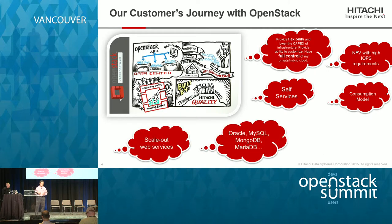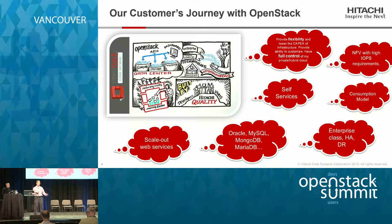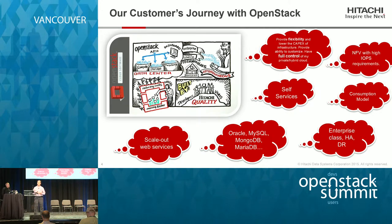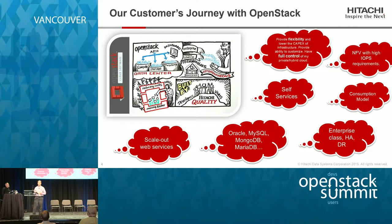A couple more examples: scale-out web services running many different databases on top of our Cinder drivers and solutions. More importantly, we hear that OpenStack is not just for scale-out — it's for scale-up as well. We've seen a lot of discussion about pets and cattle, and that's happening more and more. This is an interesting journey for us to embrace this OpenStack solution with our customers.